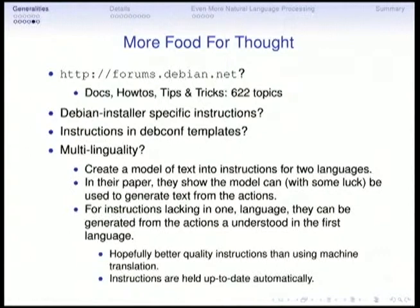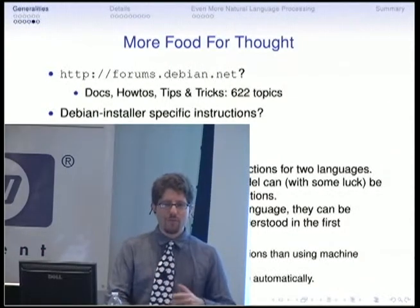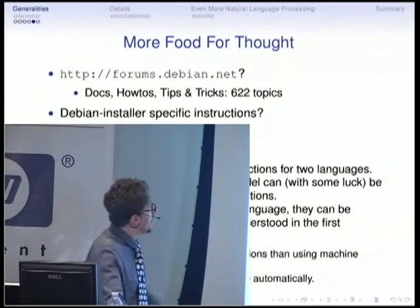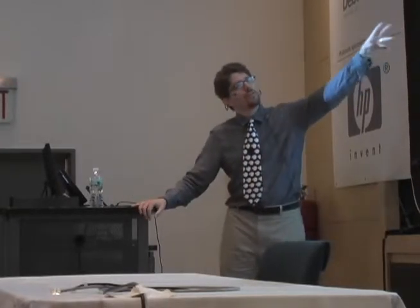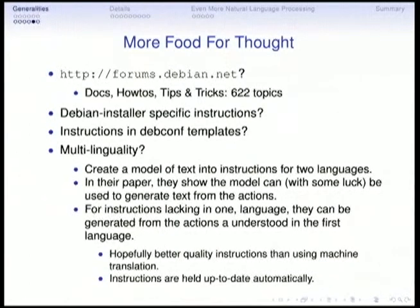There are many other places to look — forums, Debian.net has 600-plus how-to topics. The Debian installer is interesting because during installation you read and follow instructions since you have no system to execute scripts for you. There are also instructions in DevConf templates. If the system works well, you could also address multilinguality: train a model mapping text to instructions in two languages, then keep them in sync when one changes — which should produce better quality than just machine translation.